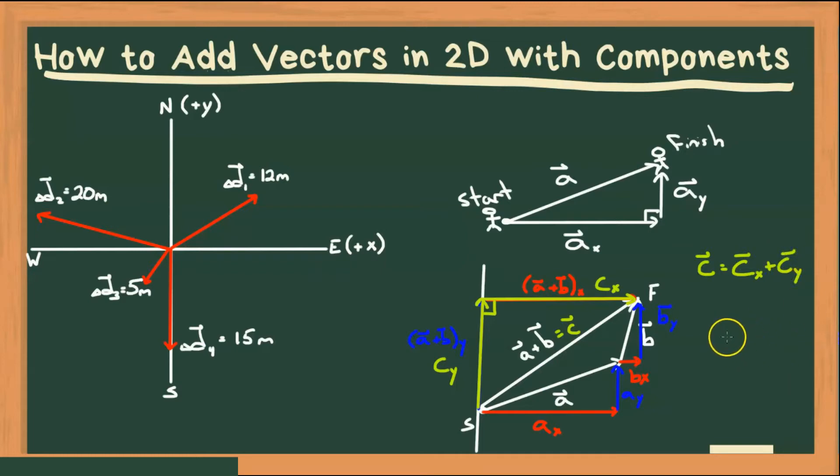So whenever we're adding vectors, say we're adding A plus B in this case, what we can do is say that, well, CX is the sum of the parts AX plus BX. And CY is the sum of the parts AY plus BY.